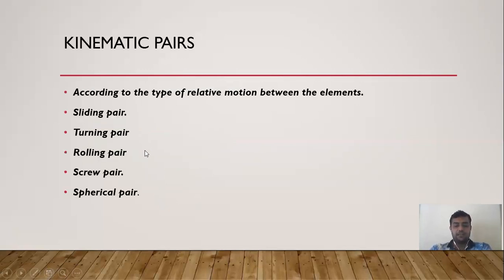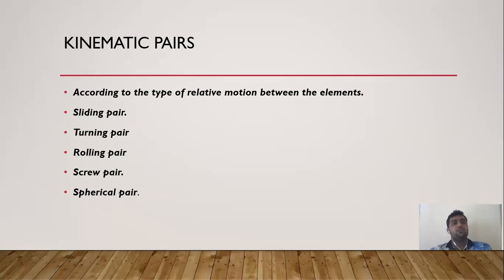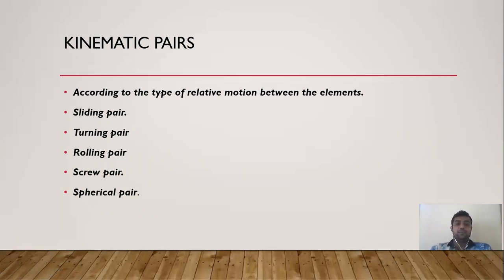What is a kinematic pair? According to the types of relative motion between elements, there are: a sliding pair — when two links have sliding motion; a turning pair — when turning motion is involved; a rolling pair — concerned with rolling motion; a screw pair — using a screw in the direction of constrained motion; and a spherical pair — when one link turns in a spherical manner relative to the second link.